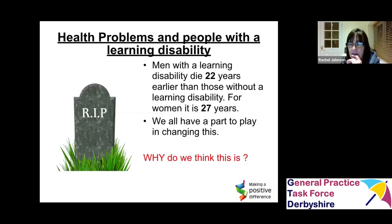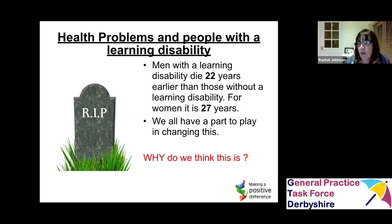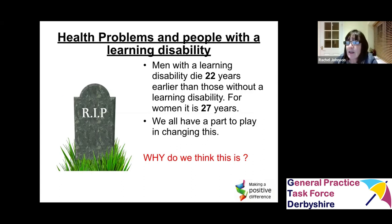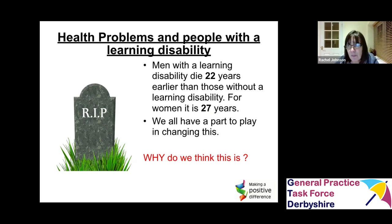Why are we so focused on health checks and the health of people with a learning disability? Because they die much younger than people in the general population. Men die on average 22 years sooner than men in the general population; for women it's 27 years. These are significant differences, and it shouldn't be the case. Often people are dying from things that could have been prevented — pretty much the same things as most of the population: respiratory infections, heart disease, cancer, epilepsy.